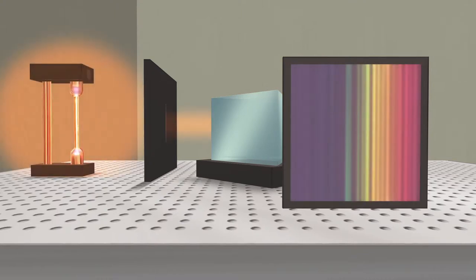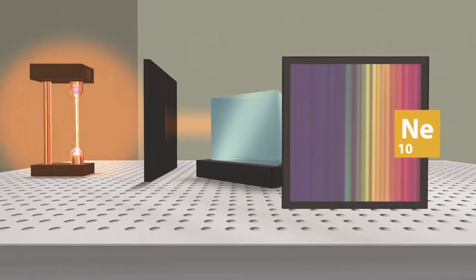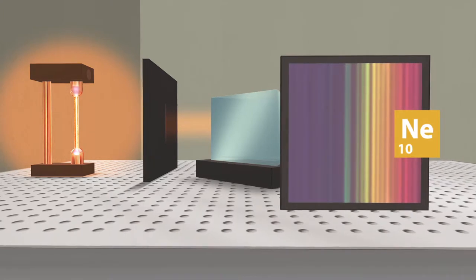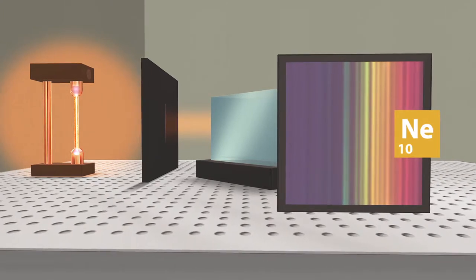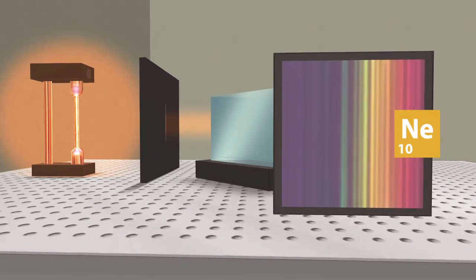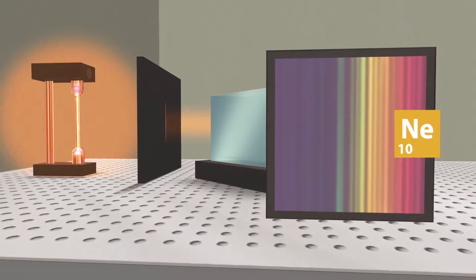However, if we choose a specific gas as a light source, in this case it is neon, only certain spectral lines will appear. This is why the light emitted by a neon tube is not white, but yellowish-orange.